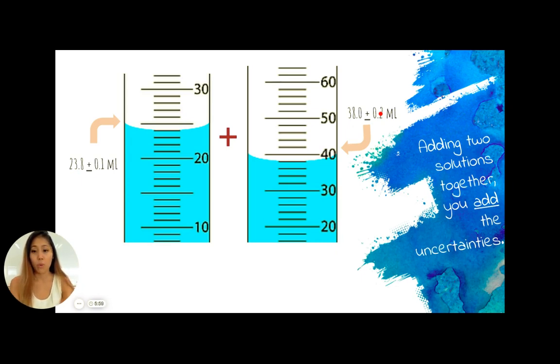So how we would go about doing this is, we would add the values together. So we would add 23.8 milliliters with 38.0 milliliters. And we would write in a separate parenthesis after our plus or minus uncertainty sign for the uncertainty that we add. So in this case, we will add 0.1 milliliters with 0.2 milliliters.